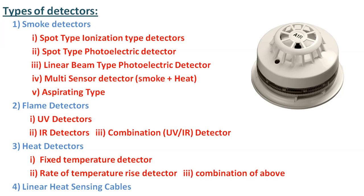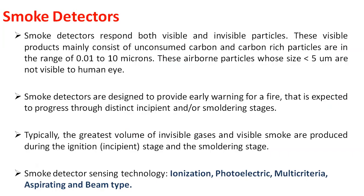The types of detectors include smoke detectors, flame detectors, heat detectors, and linear heat sensing cables. In this video, I am discussing various types of smoke detectors: spot type ionization detector, spot type photoelectric detector, linear beam type photoelectric detector, multi-sensor detector which is a combination of smoke and heat, and aspirating type smoke detector.